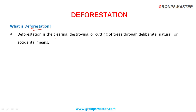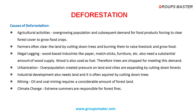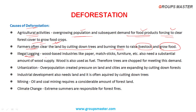Next topic: Deforestation. Deforestation is the clearing, destroying or cutting of trees through deliberate, natural, or accidental means. Causes of deforestation: The main cause is agriculture activities - over-growing population and subsequent demand for food products forces clearing of forest cover to grow food crops. Farmers often clear land by cutting down trees and burning them to raise livestock and grow food. Illegal logging by wood-based industries like paper, plastic, and furniture also drives deforestation due to high market demand.